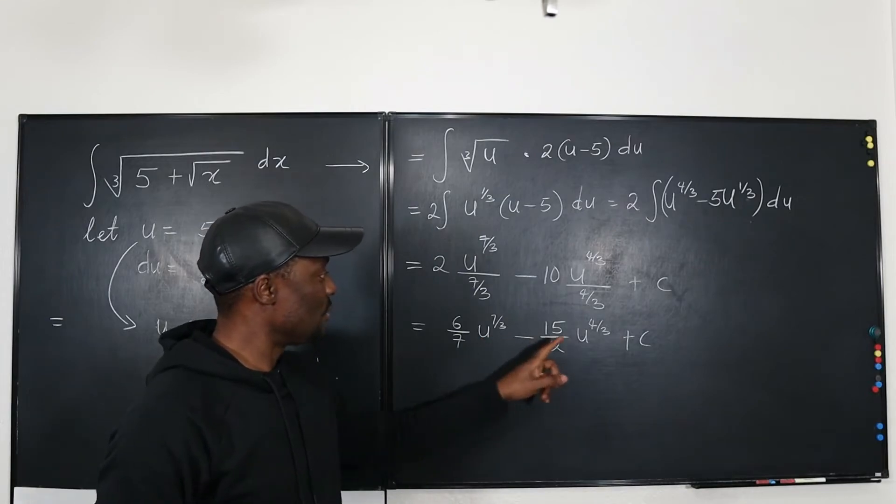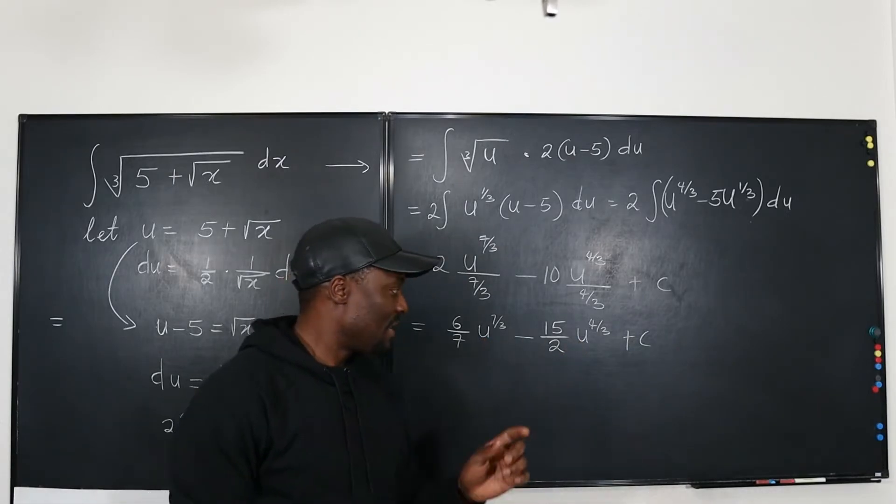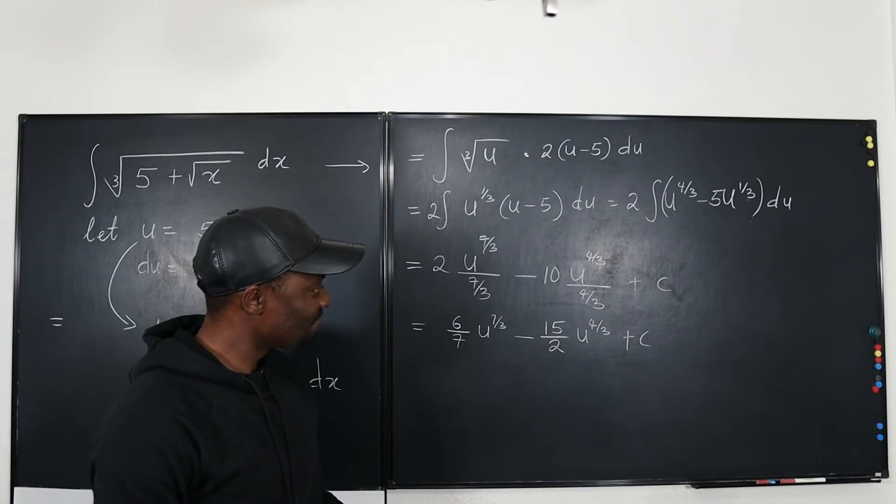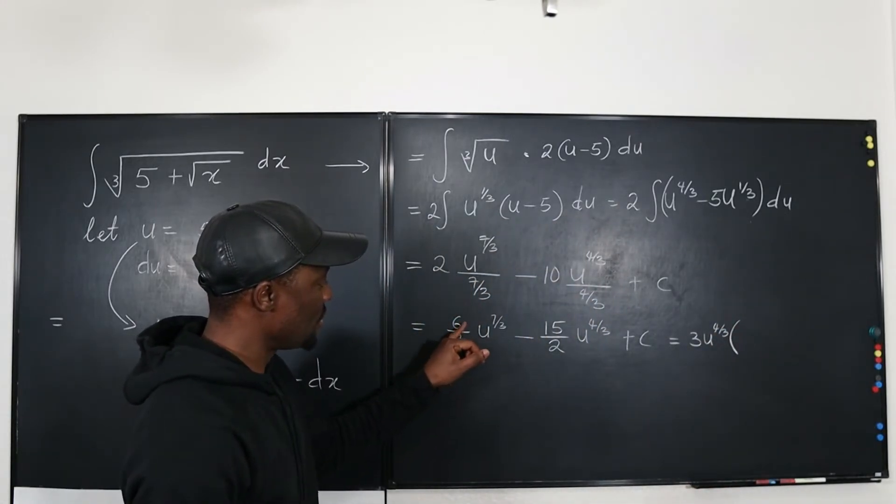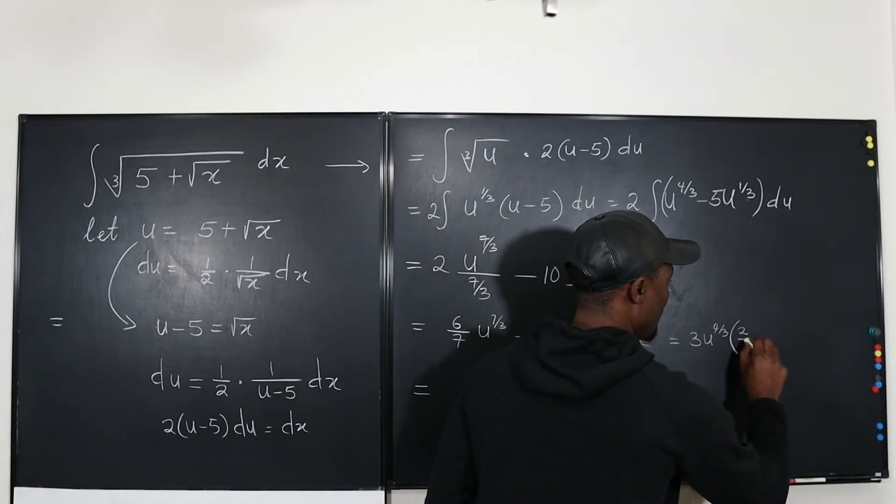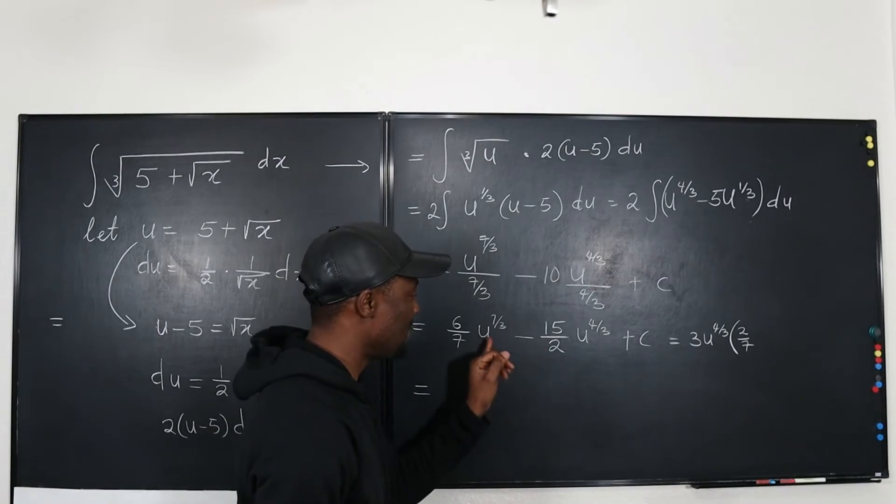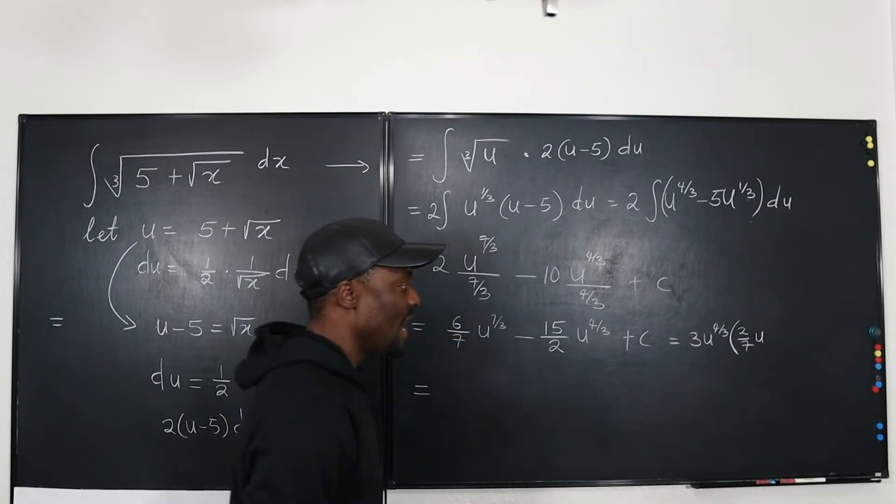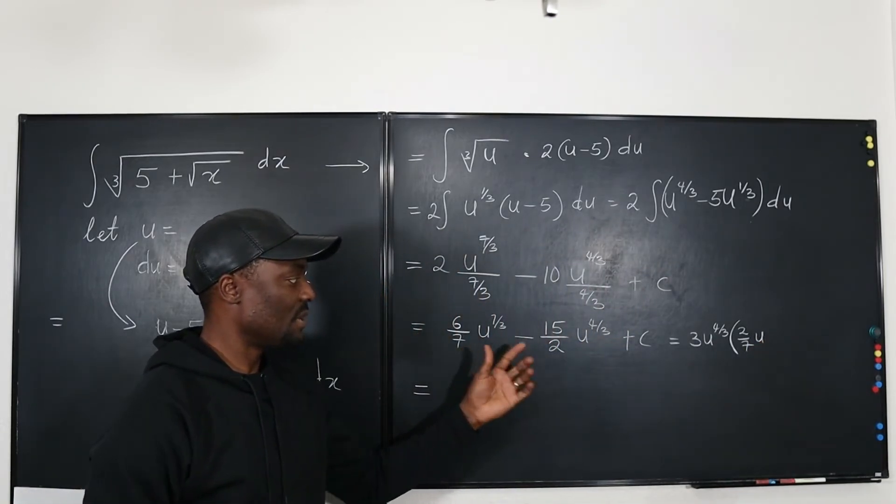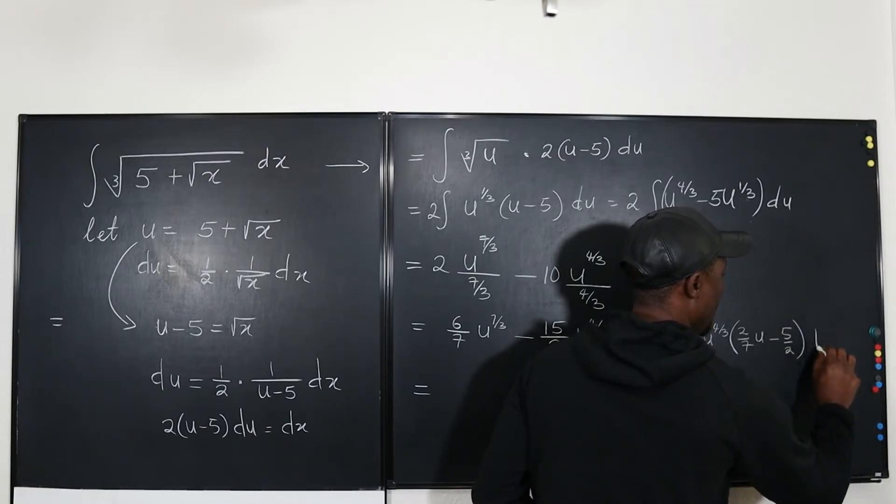So your last move is just to replace u with what we said u was, 5 plus square root of x, and that's it. Just replace it and leave it. But if you want to clean things up, you might say this is going to be 3 u to the 4/3. And what is left on the inside is going to be 2/7 u. If you divide this by u to the 4/3 - see I factored, so factoring means you're using it to divide each of the terms. So if I divide this by u to the 4/3, it's going to be 7/3 minus 4/3. That gives me 3/3, which is just 1, so it's u to the first power. It's just u. And because I factored out u to the 4/3 from here, there'll be no more u to the 4/3. What is left is just 5/2 here minus 5 over 2. Oh plus c.